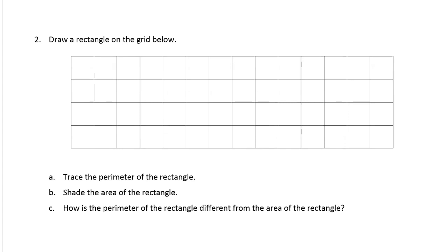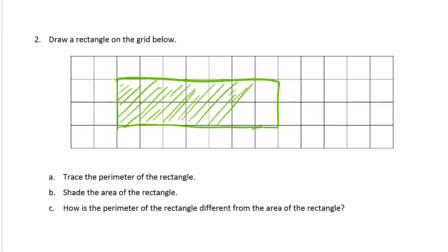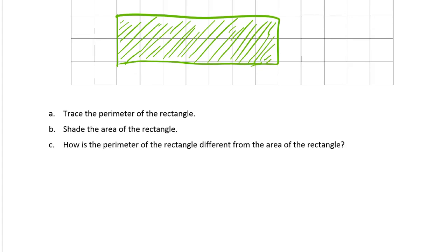Draw a rectangle on the grid below - well the whole grid is a rectangle really but I'm just going to choose this. Trace the perimeter of the rectangle - kind of just did that. Shade the area of the rectangle. Now we're shading the area because I mentioned before that the perimeter is the outside - you'd be tracing around the outside of the shape for perimeter, but for area we're shading the inside. So this is the area, the area is shaded. How is the perimeter of the rectangle different from the area of the rectangle?